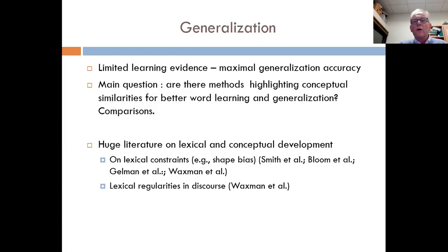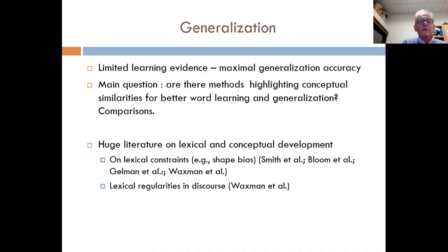The basic idea of novel noun learning in terms of generalization would be that with very limited learning evidence — most of the time, maybe just one stimulus — children must achieve maximal generalization accuracy. The main question of my talk will be whether there are methods highlighting conceptual similarities for better word learning and generalization. I will focus more on what we call comparison design: the basic idea is just to have more than one stimulus belonging to one category associated with the same word.